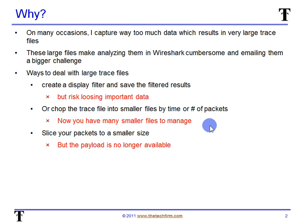The second thing we can do is chop up the trace file into smaller files, and you can do this by time or by the number of packets. The problem is you've now got many smaller files to manage, which in some cases may be just fine. Lastly, we can slice the packets to a smaller size — instead of looking at the full packet, you might chop it to 128 bytes. By doing so you've got all your packets, but only the header information, so any payload data like a login name or password may no longer be available.